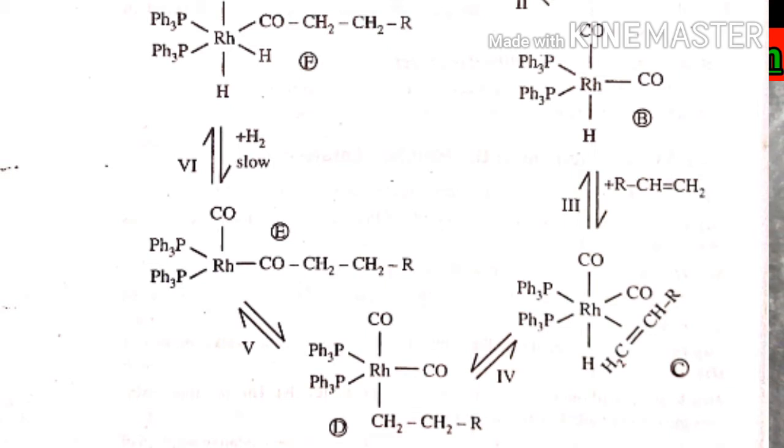Species C is a six-coordinated saturated alkene complex. Step 4 is the insertion of the alkene into the Rh–H bond to give an alkyl derivative, species D — a five-coordinated complex.